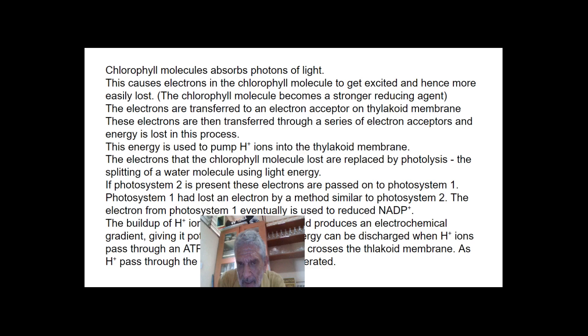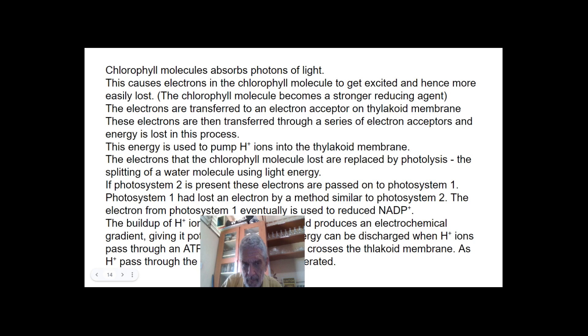If photosystem two is present, electrons are passed onto photosystem one which had lost an electron by the same method. The electron from photosystem one is eventually used to reduce NADP plus. And the buildup of H plus ions inside the thylakoid produces an electrochemical gradient, giving it potential energy. And this can be discharged when H plus ions pass through an ATP synthesize enzyme that crosses the thylakoid membrane. As it passes through the membrane, ATP is generated.